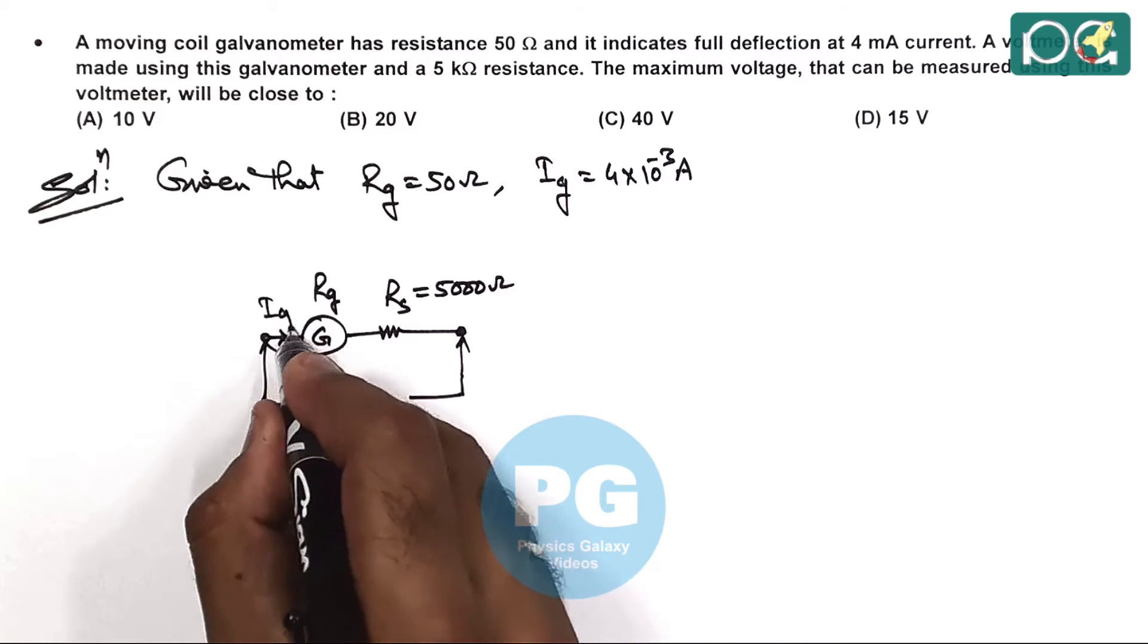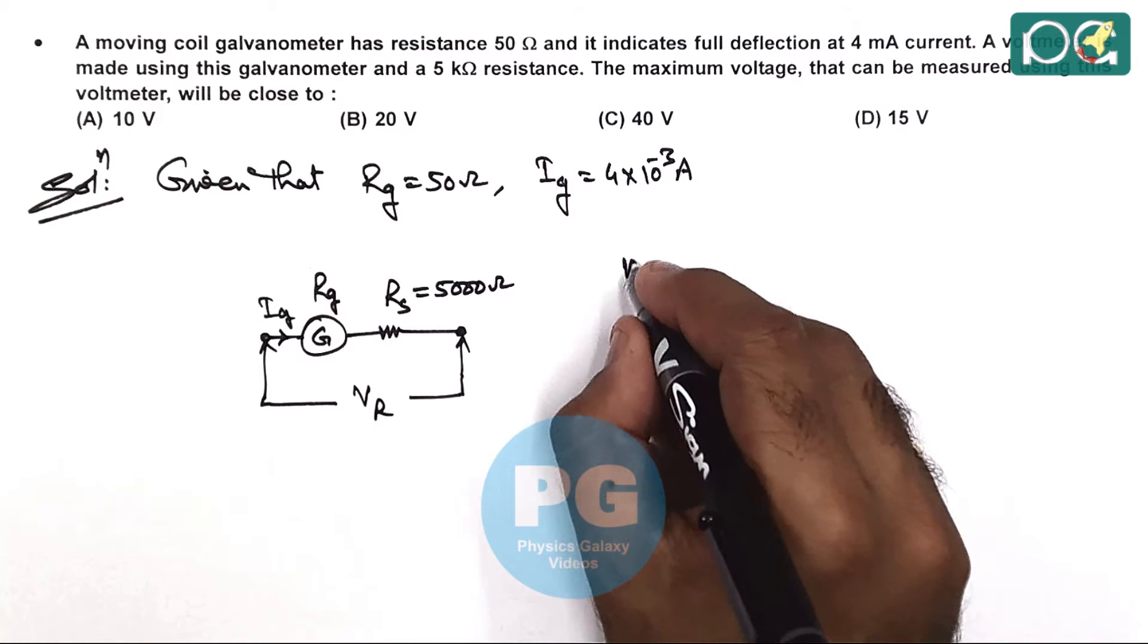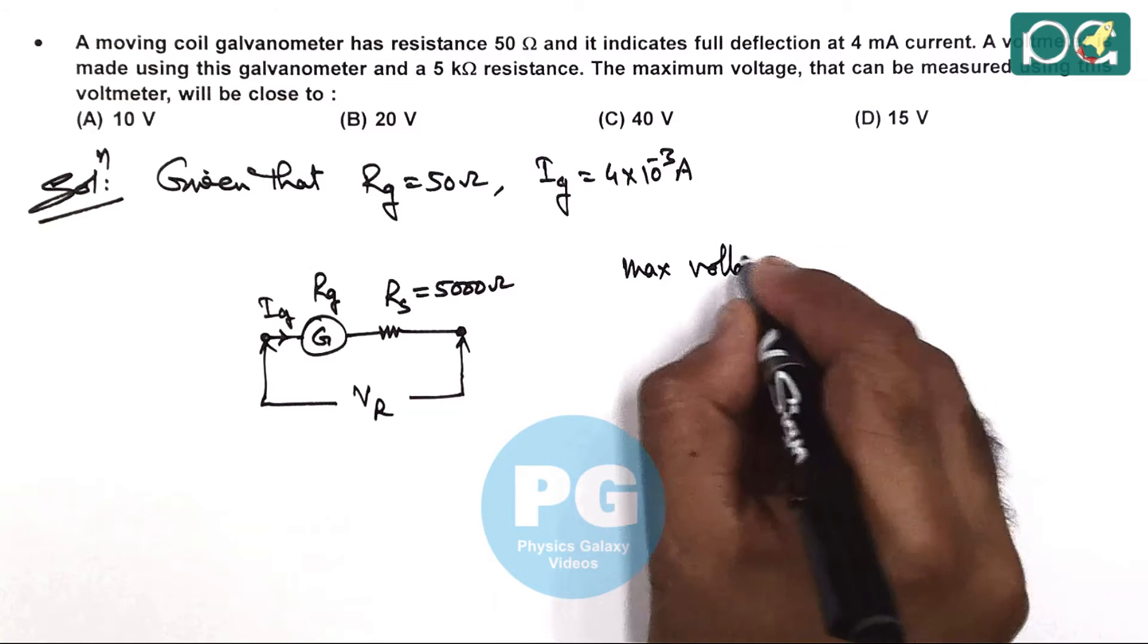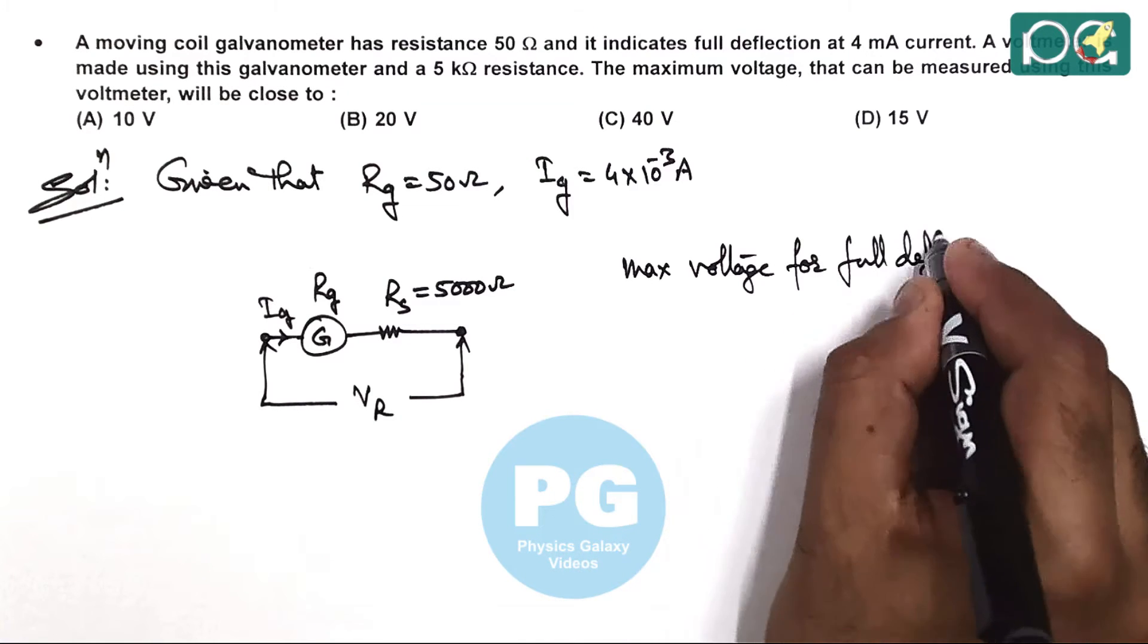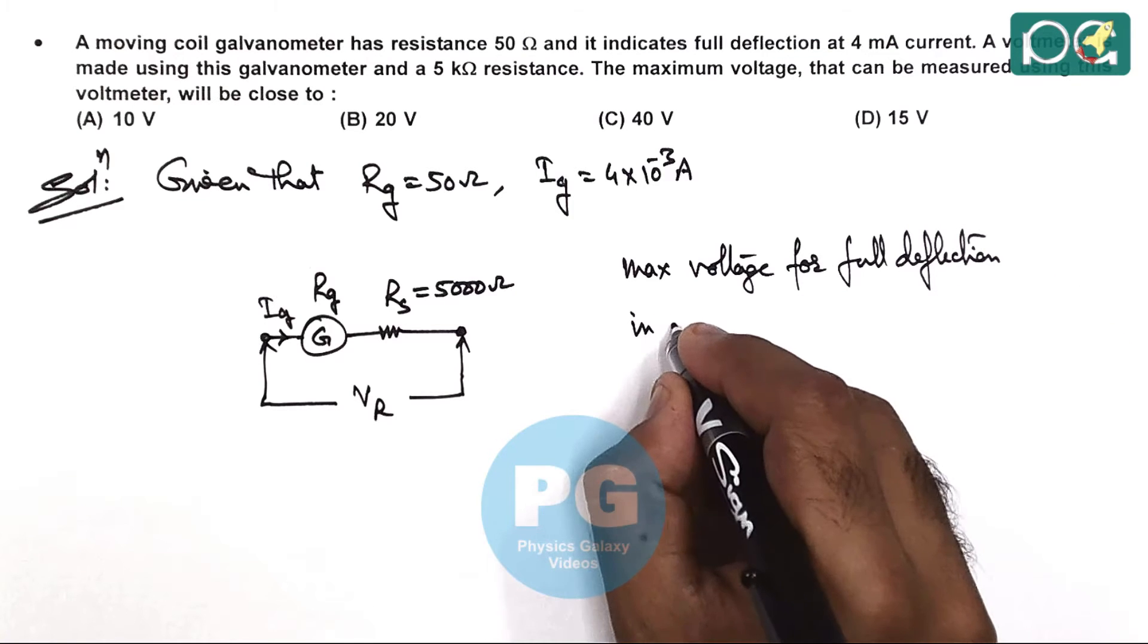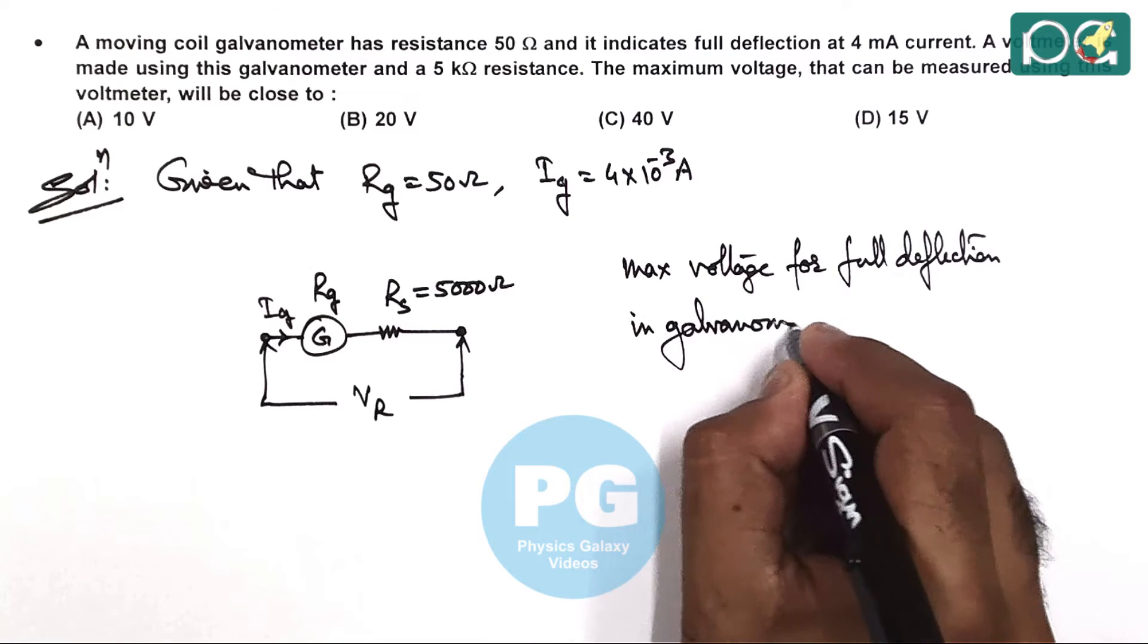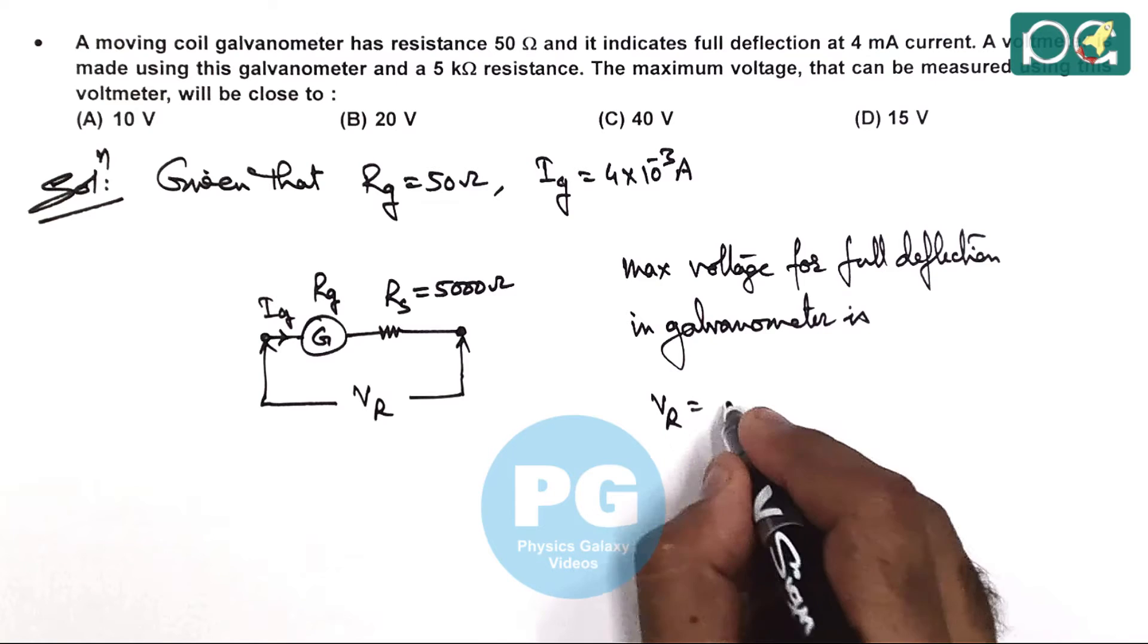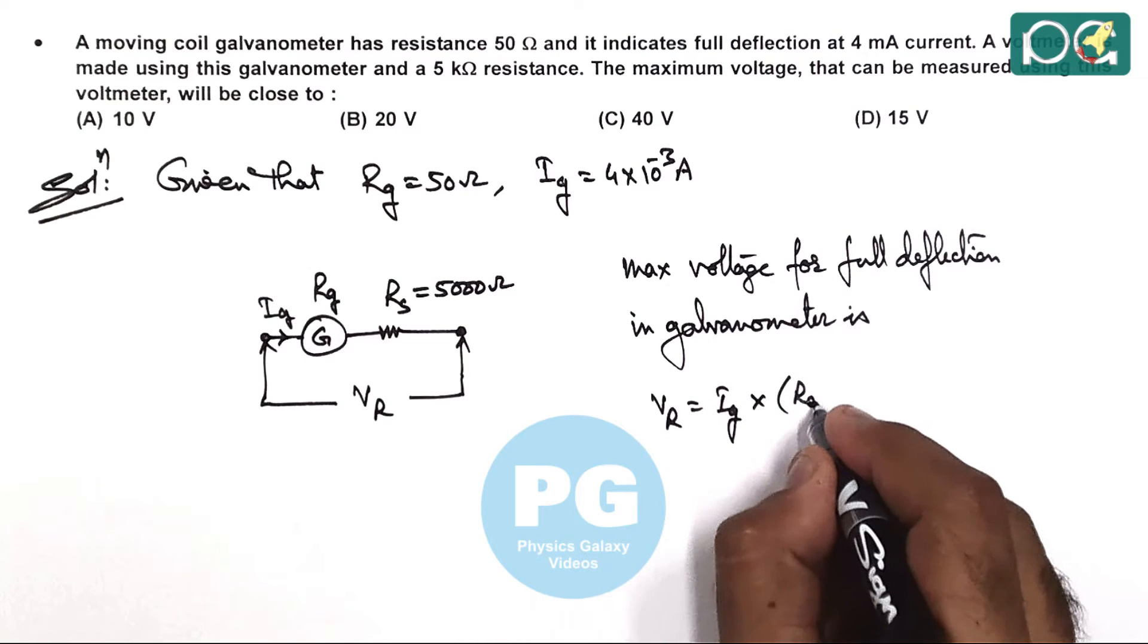A current IG should flow through it. So we can say the maximum voltage for full deflection in galvanometer is VR equals IG multiplied by RG plus RS.